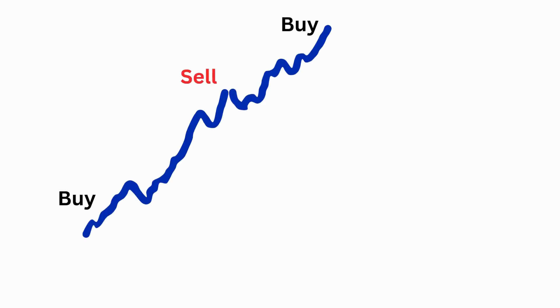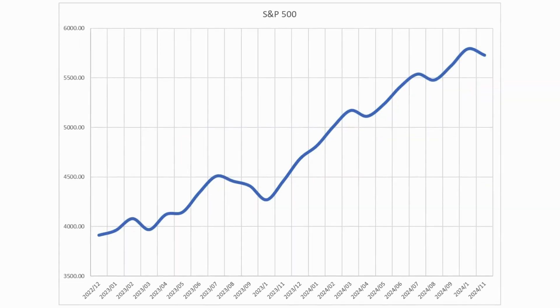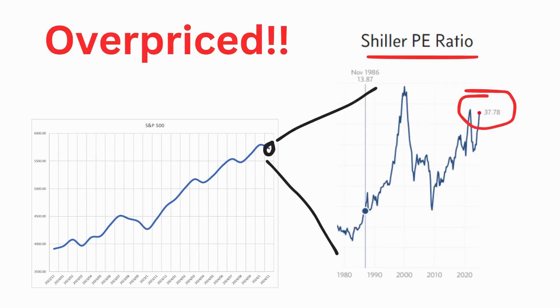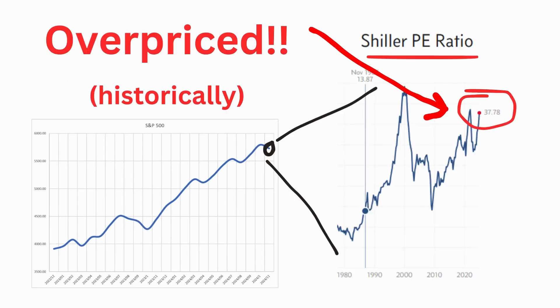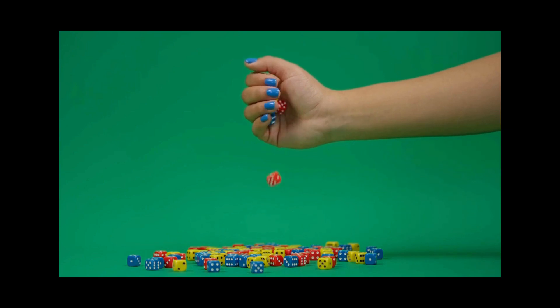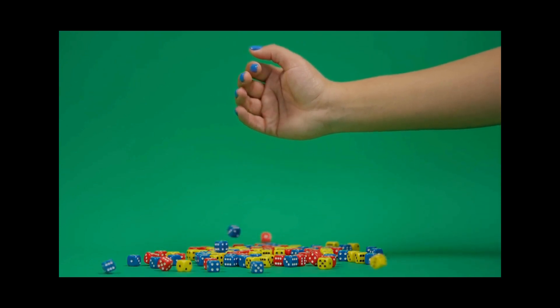Have you ever been frustrated by the behaviour of financial markets, where the movements seem random or go against what you'd expect? Or perhaps you've looked at the S&P 500 and wondered how it can keep rising when it seems so overpriced? It's important to understand that these market movements may seem random, but they actually have structure to them.